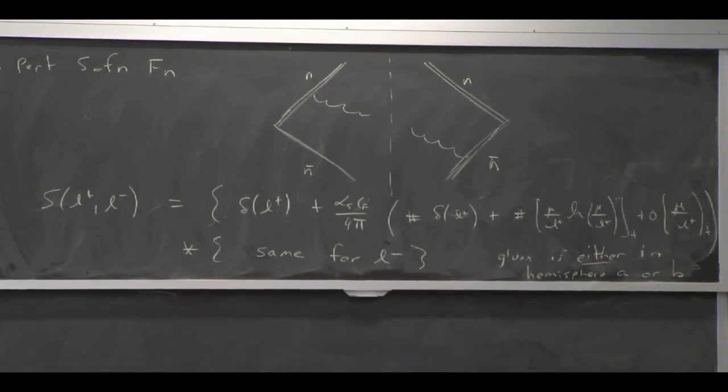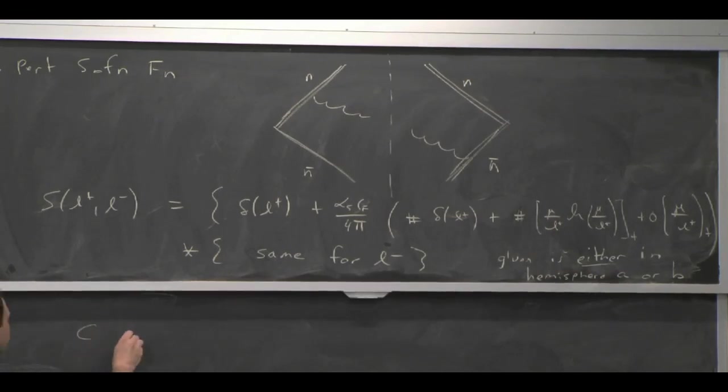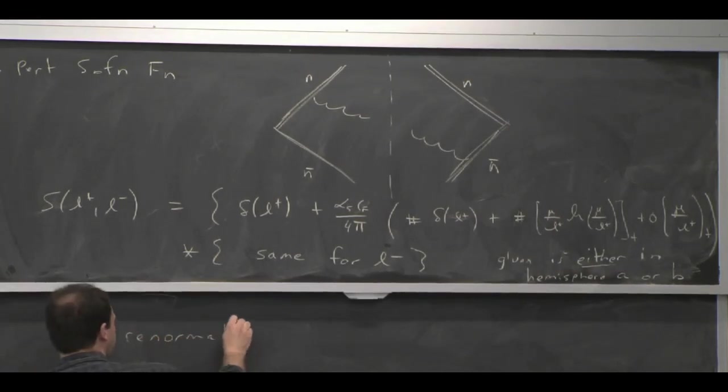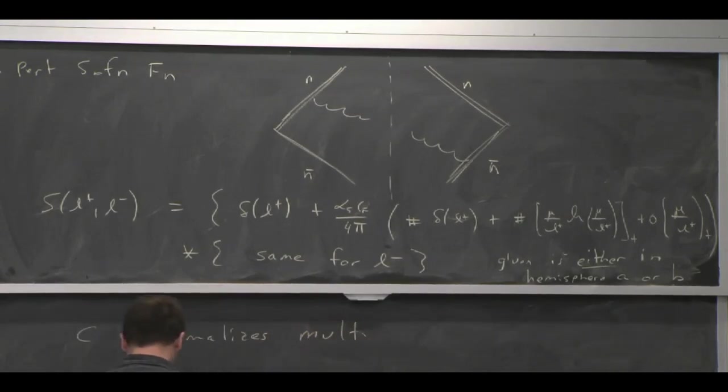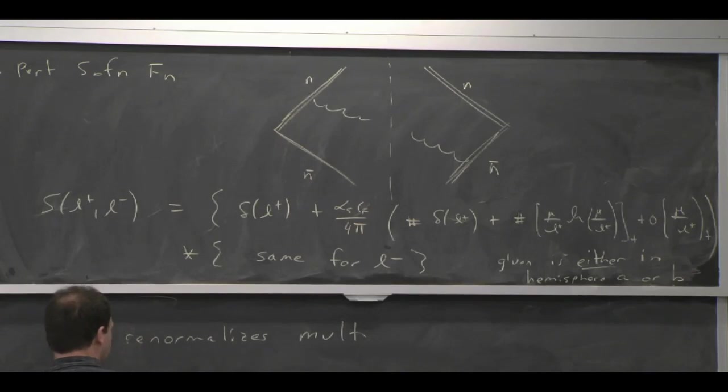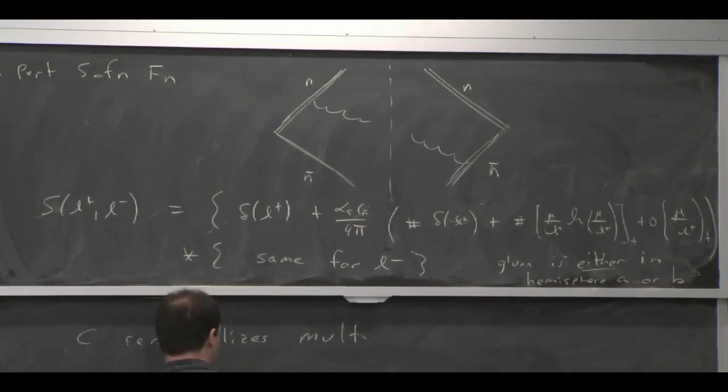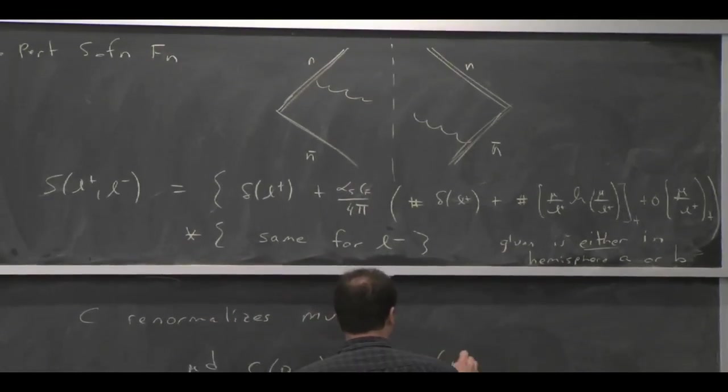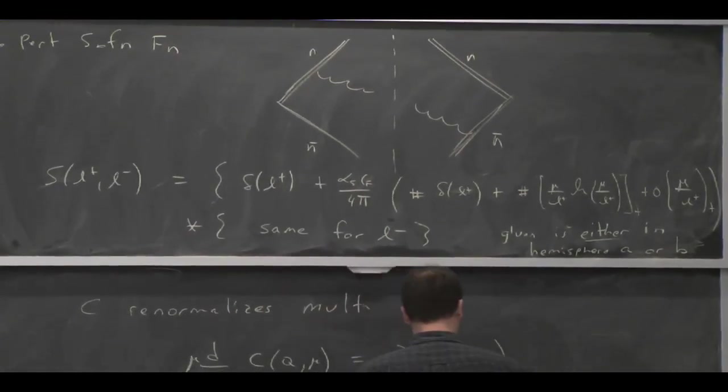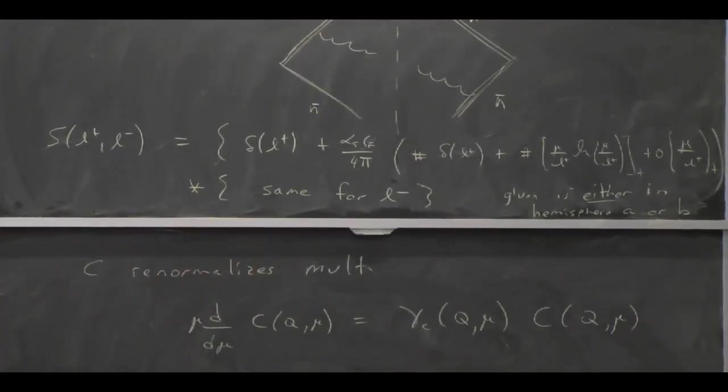So that gives you an idea of what these perturbative functions look like. If you talk about renormalization, C renormalizes multiplicatively. And so the renormalization group equation for C, just like the one we had before for B to S gamma, there's no integrals. And that, again, came about from the kinematics fixing the variables.